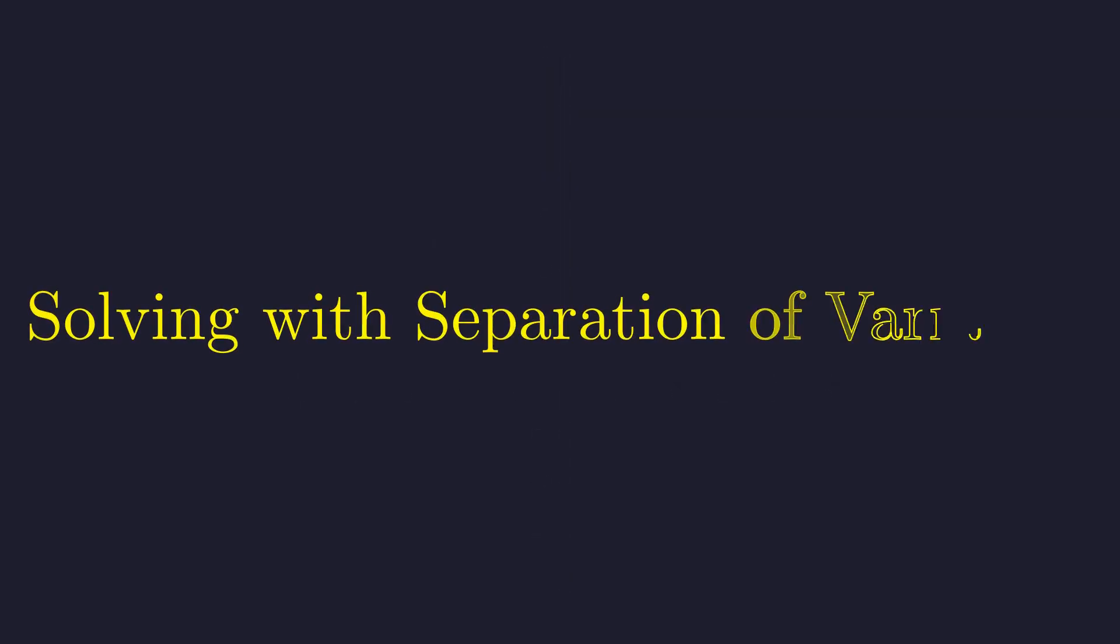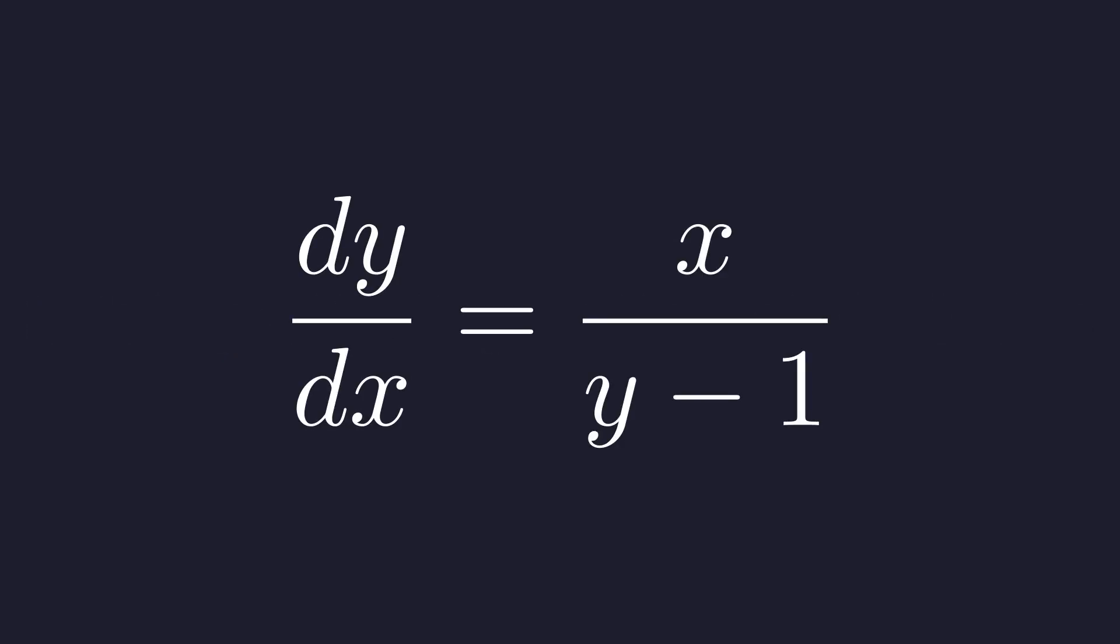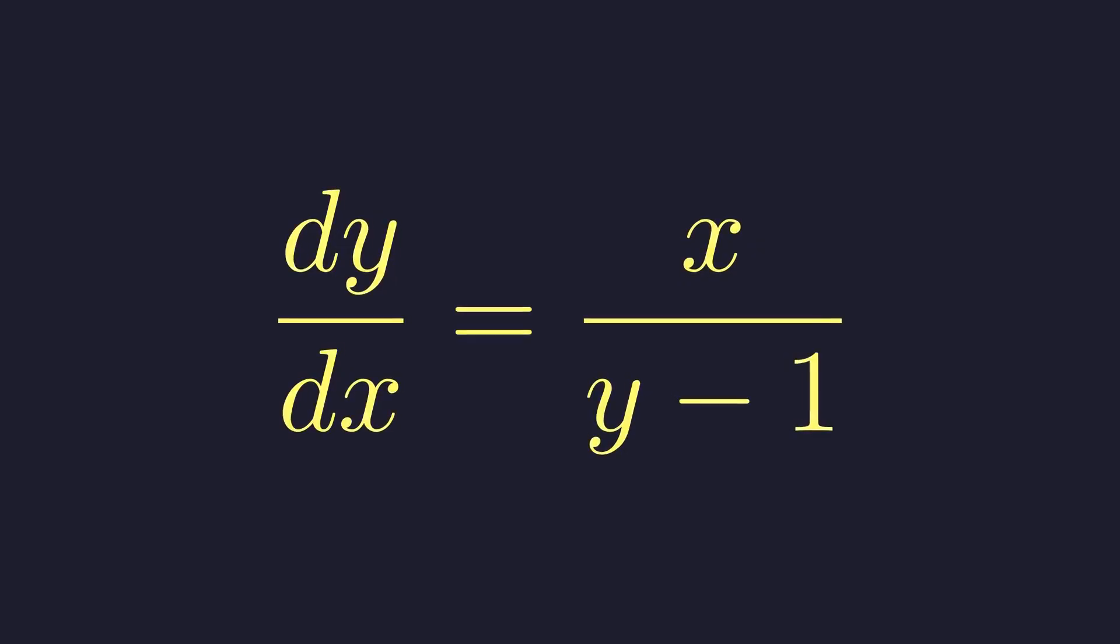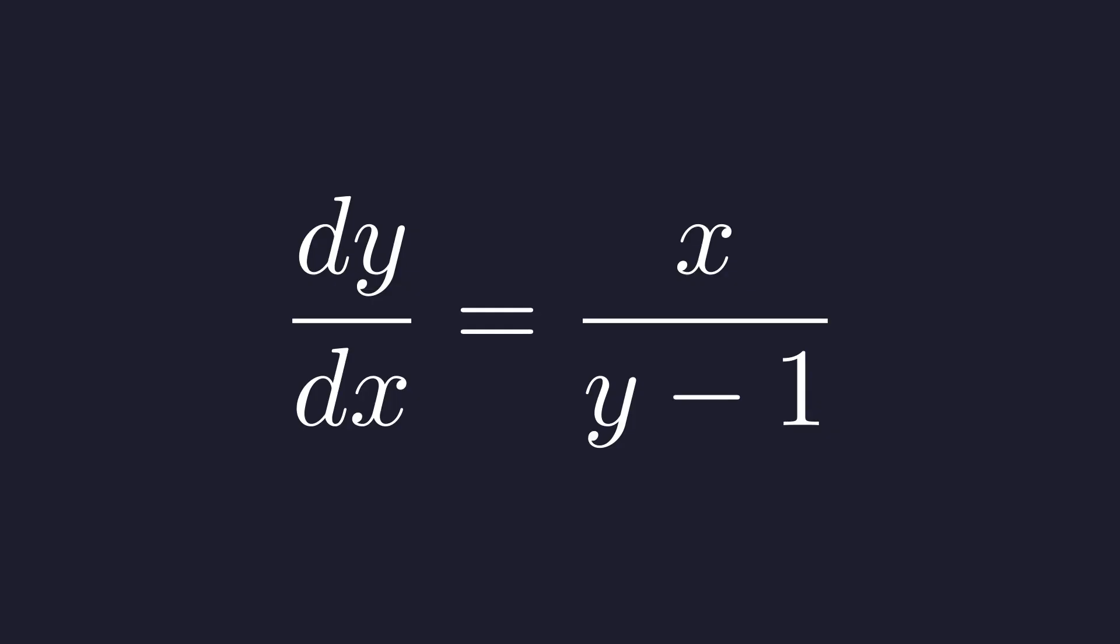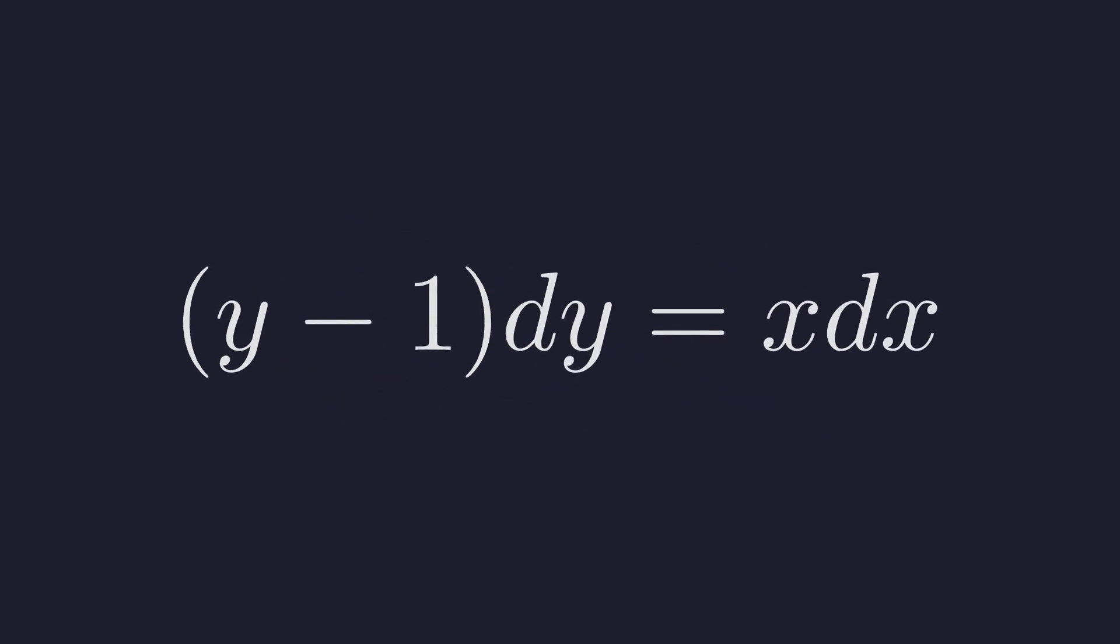Now, let's find the general solution for this equation. This is a separable differential equation. Our goal is to group all y terms with dy and all x terms with dx. We will multiply both sides by y minus 1 and by dx. This gives us the separated form. The quantity y minus 1 times dy equals x times dx.